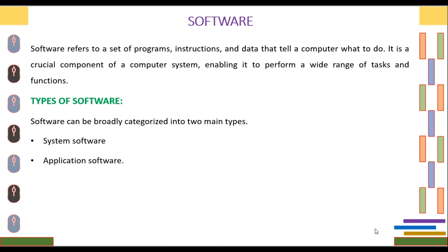Software can be broadly categorized into two main types. First is system software. Second is application software. We will study these both one by one in detail.